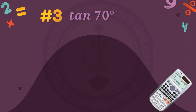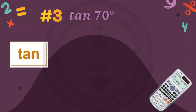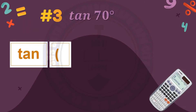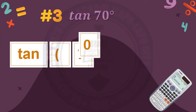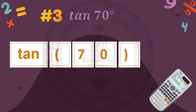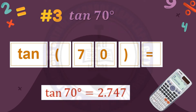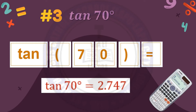Number 3: tangent 70 degrees. Click tan for tangent, click the open parenthesis, then 70, then the close parenthesis, and lastly the equal sign. And with that, our tangent 70 degrees is 2.747.